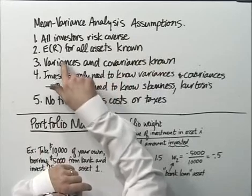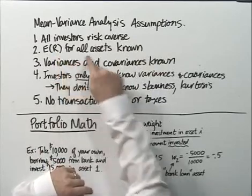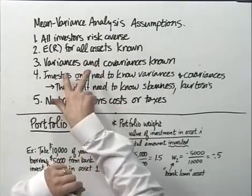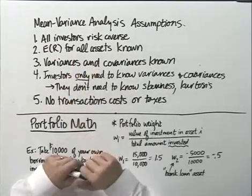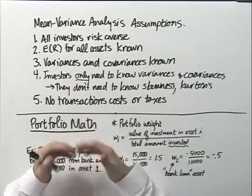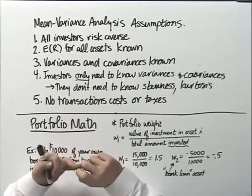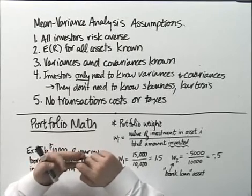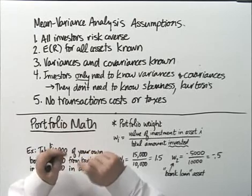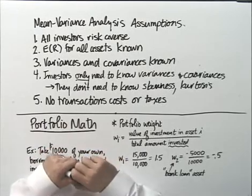The second assumption is an assumption about information: that the expected return for every asset is known. The third, likewise, is another assumption about information — that variances and covariances of all the assets are known. So every asset has a known variance, a known expected return, and we know all of the covariances between each asset and every other asset. That's a lot of information to assume that people know.